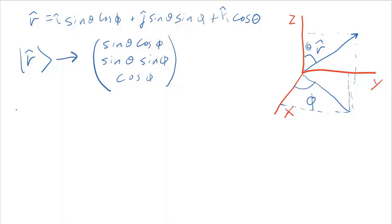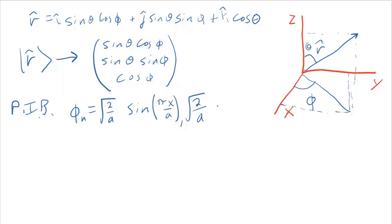Let's look at the particle in a box states. You have the nth state is given by the square root of 2 over the width of the box times sine of n pi x over a. That's the first one. The second one. And so forth, sine of 3 pi x over a and so on.